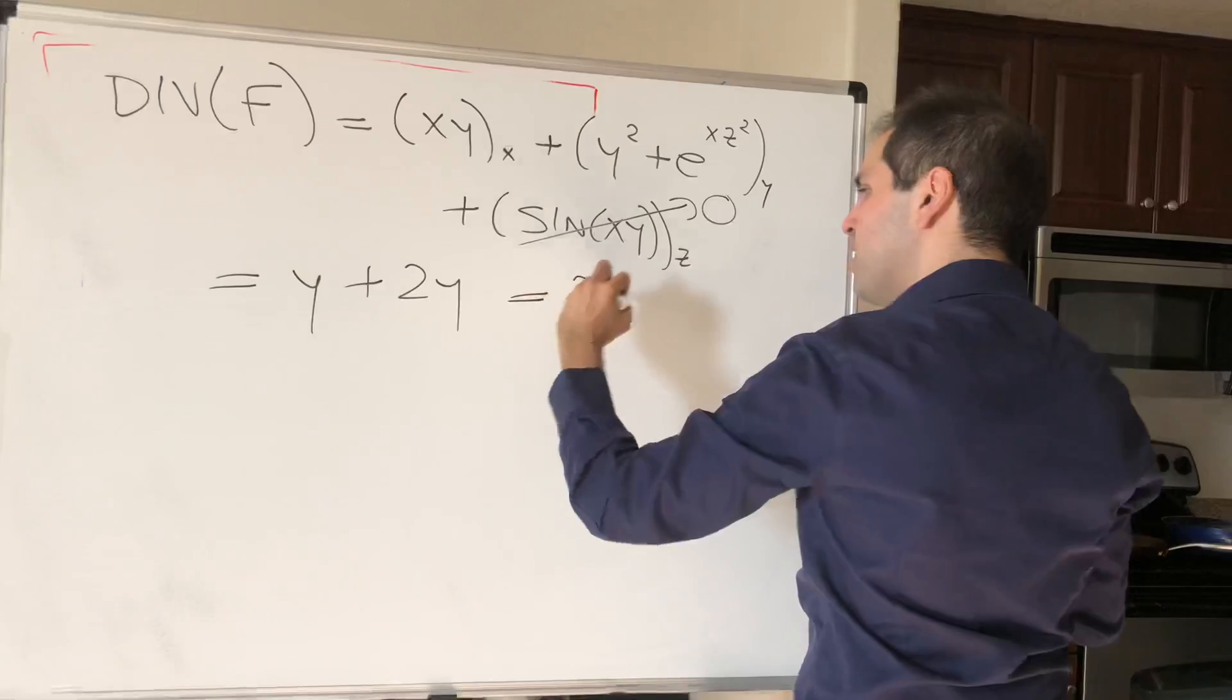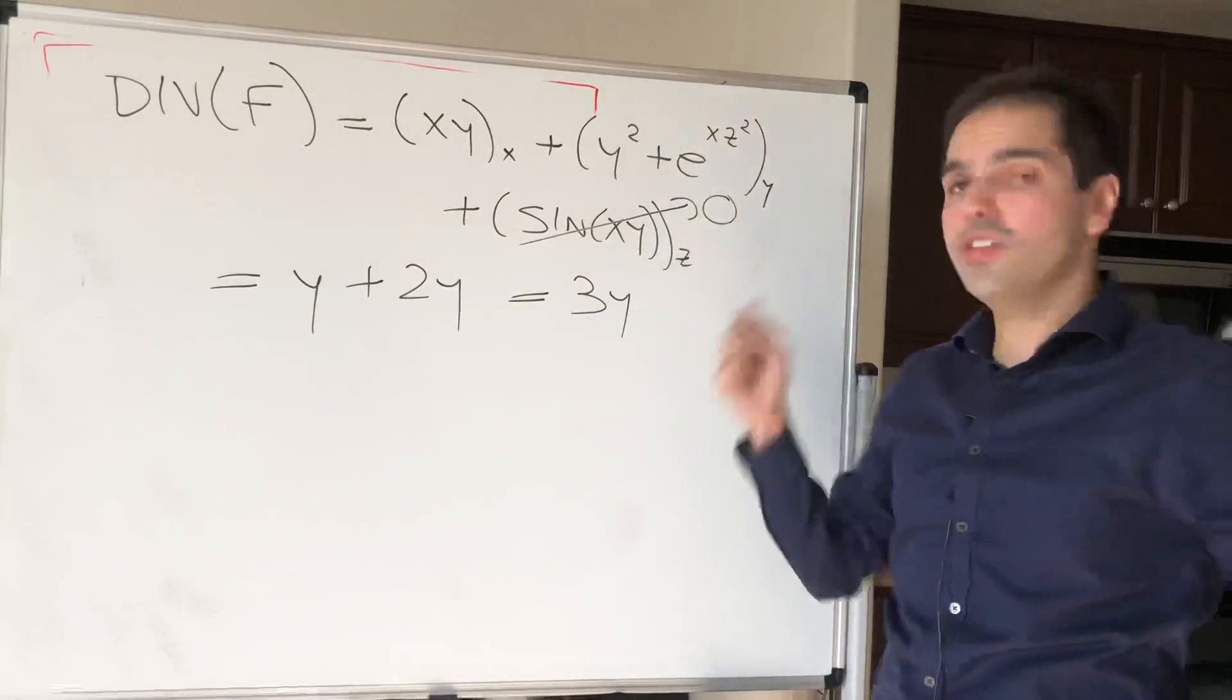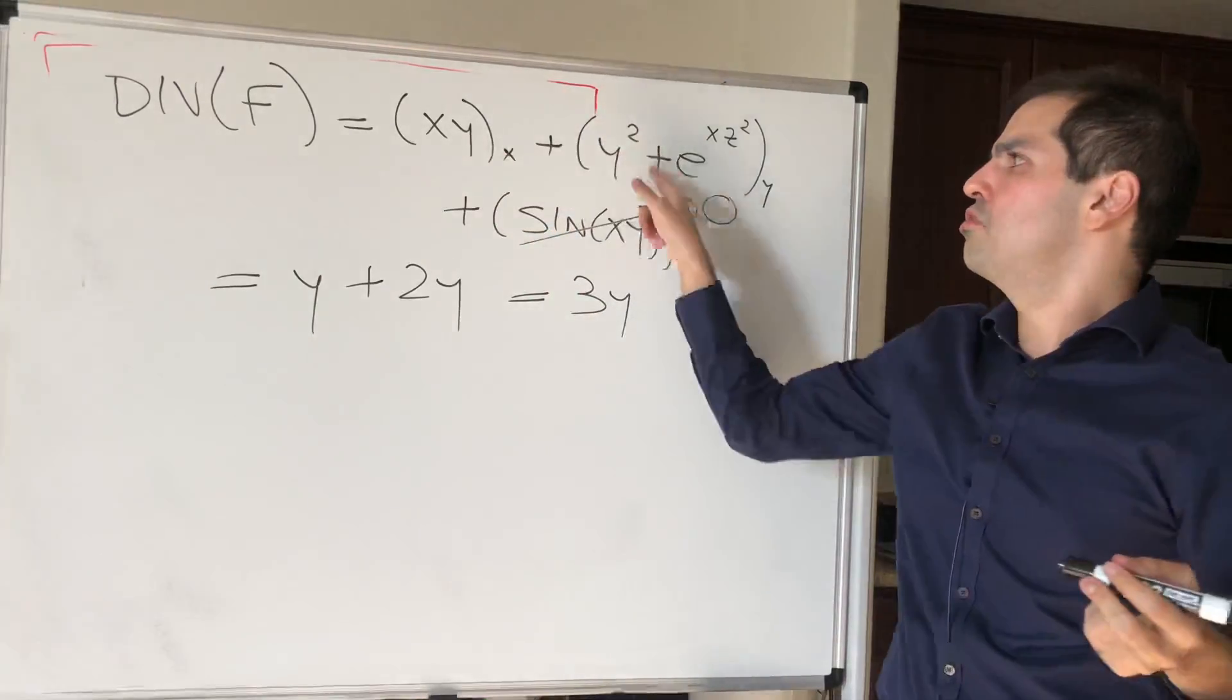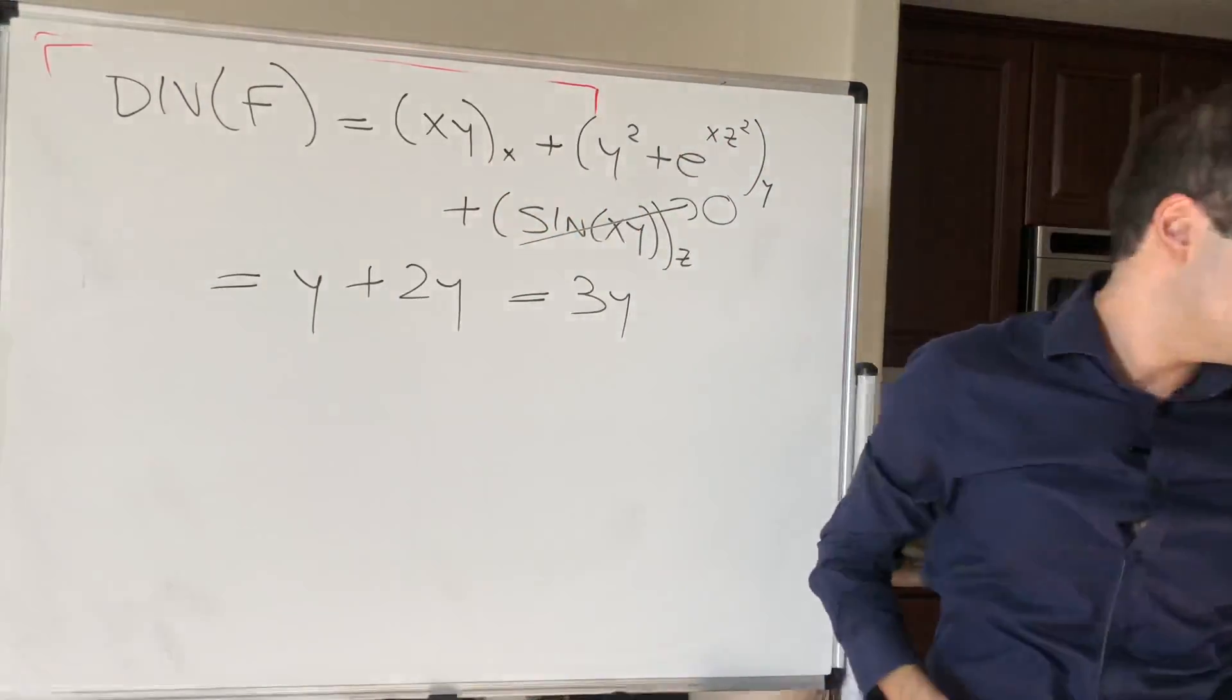And the z derivative of this just disappears. So in the end, we just need to calculate the triple integral of the function 3y, which is much easier than the surface integral of the stuff I don't even want to talk about.